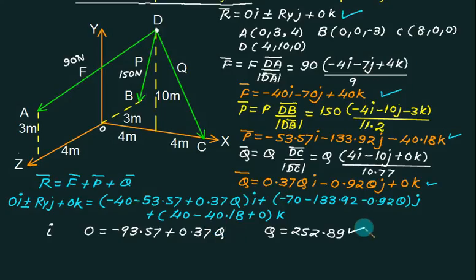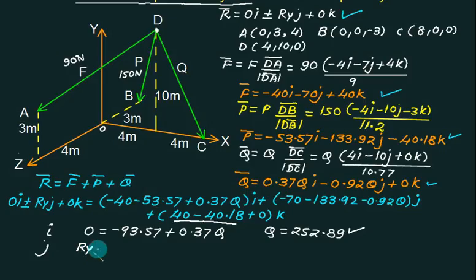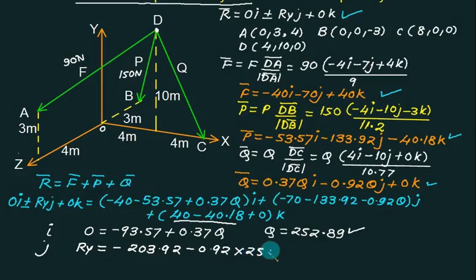The K coefficient check comes out to almost 0, which is consistent. Now can we find the value of Ry? For this we go to the J equation. Ry equals minus 70 minus 133.92, which is minus 203.92, minus 0.92 times Q times the appropriate factor, giving approximately minus 0.89. This means Ry is negative — the resultant is going downward.